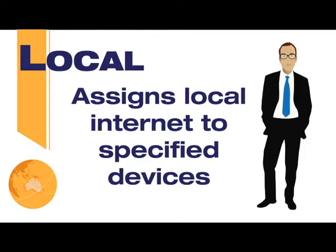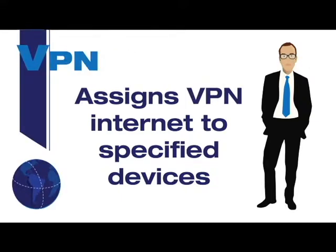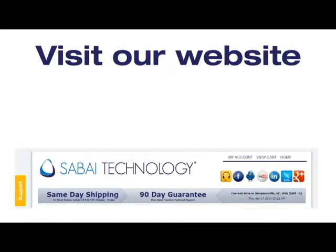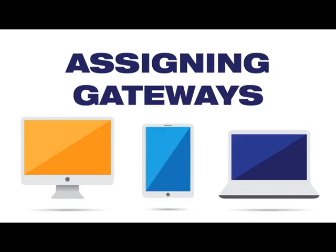The local setting assigns local internet to specified devices. The VPN setting assigns VPN internet to the specified devices. The accelerator setting assigns VPN accelerator internet and is only available if you have purchased this device separately from our website.